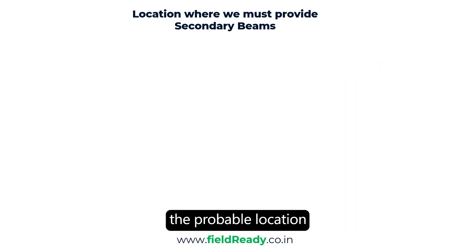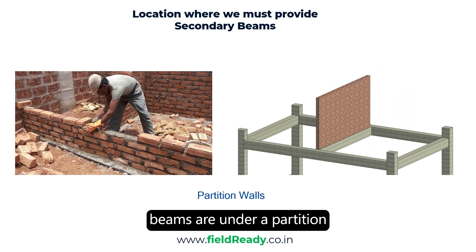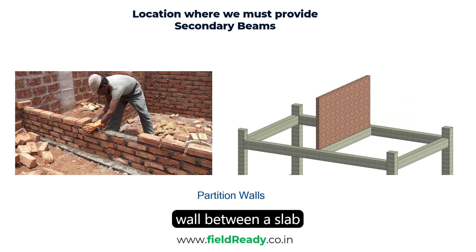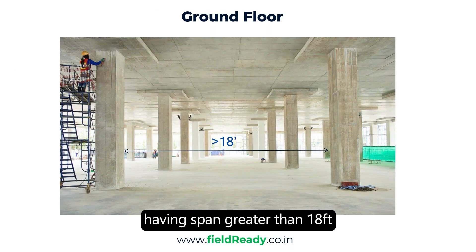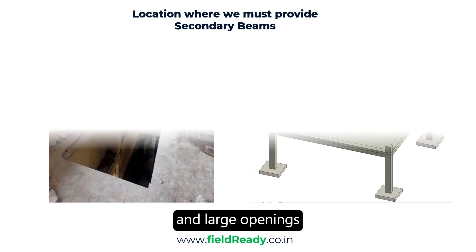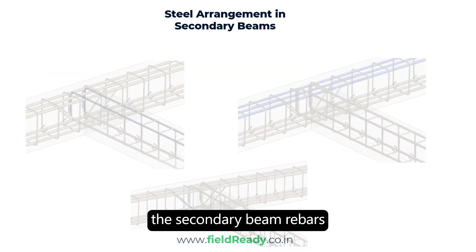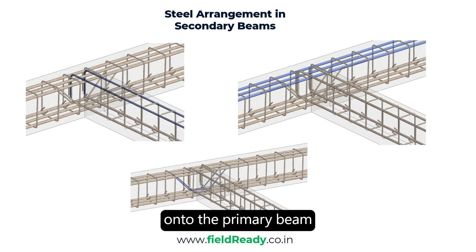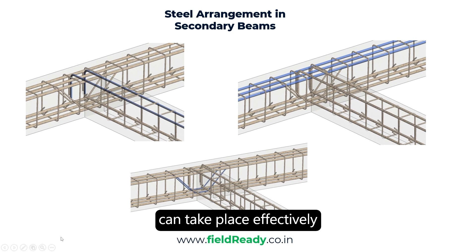Coming back, the probable locations where we must provide secondary beams are: under a partition wall, between a slab having a span greater than 18 feet, and at large openings inside a slab. Coming to the last topic — how we can arrange the secondary beam rebars onto the primary beam so that load transfer from the secondary beam to the primary beam can take place effectively.